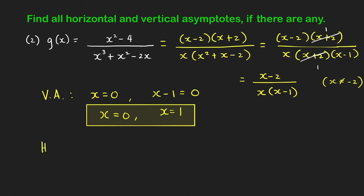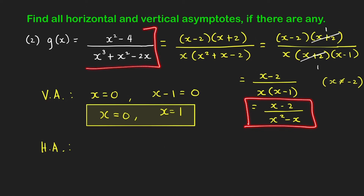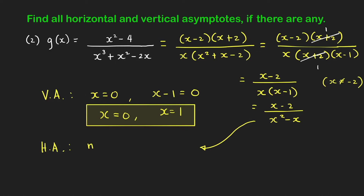For horizontal asymptotes, we look at the simplified expression x minus 2 over x squared minus x. The highest power of x in the numerator is 1, so n equals 1. The highest power of x in the denominator is 2, so m equals 2. Since n is less than m, we conclude that the horizontal asymptote is the x-axis, whose equation is y equals 0. So y equals 0 is the horizontal asymptote of g.